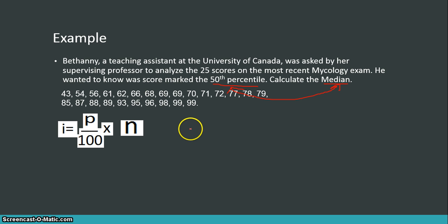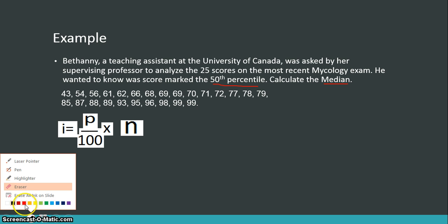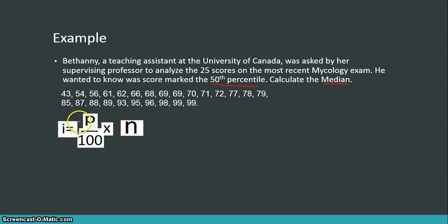So let's try it. Here are our 25 test scores. And we need to calculate the 50th percentile. So my P is going to be 50 because that's the percentile I want. And my N is going to be 25 because I have 25 scores in my data set. And notice I've arranged them from least to greatest, which is very important. And when I do this, I get an I, an index value of 12.5.